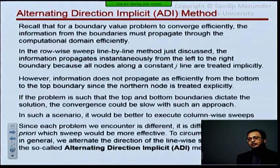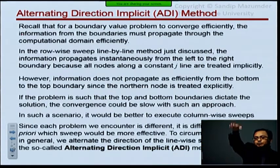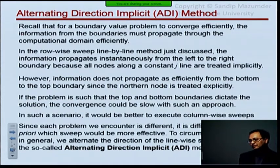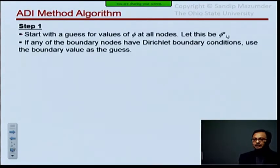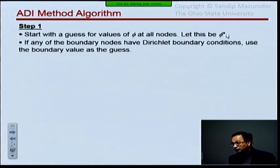Some people even go to the extent of doing bottom-to-top, left-to-right, followed by top-to-bottom, right-to-left. To some extent convergence is still problem-dependent. But that's what the ADI algorithm does. I'll show you some examples of what happens when you do alternating directions versus just row-wise, showing convergence plots. But let's go over the algorithm first.